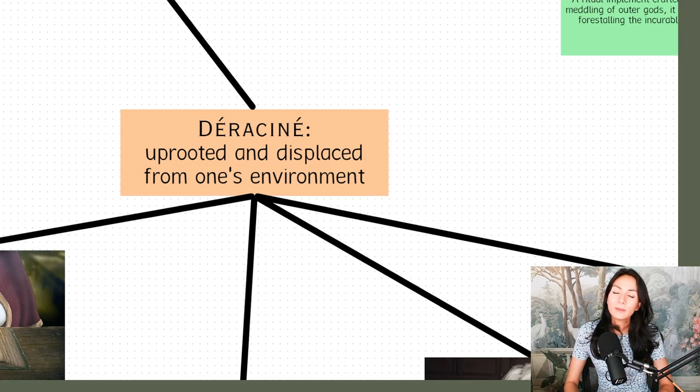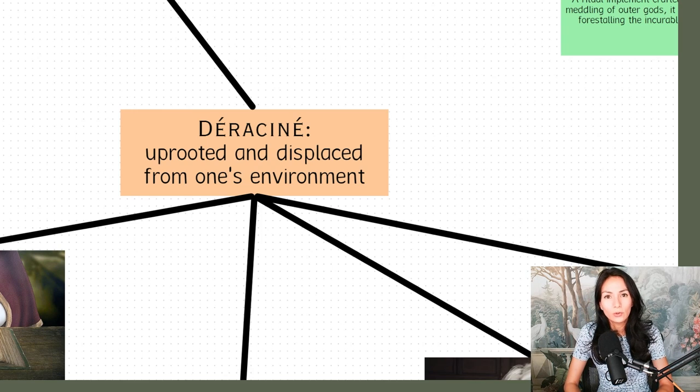Deracine is a French term that means to be uprooted or displaced from one's environment, which is what very literally happens to Miquella as Mohg uproots him and takes him out of the Haligtree. If you speak French, the word is déraciné. It sounds prettier like that, doesn't it?